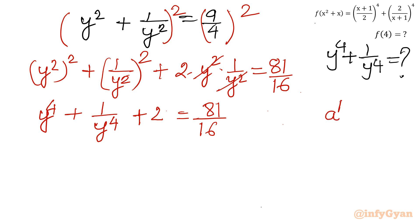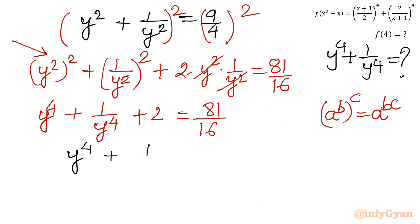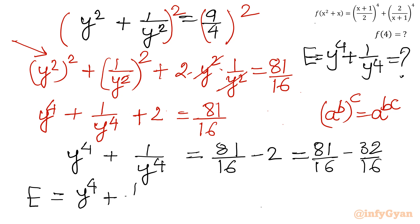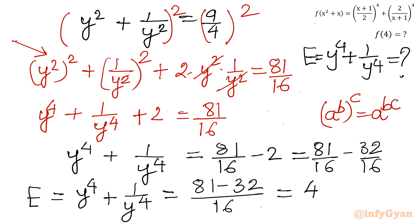Using the identity (a to the power b) to the power c equals a to the power b times c. Subtracting 2 from both sides: y to the power 4 plus 1 over y to the power 4 equal to 81 over 16 minus 2, which equals 81 over 16 minus 32 over 16, giving 49 over 16.